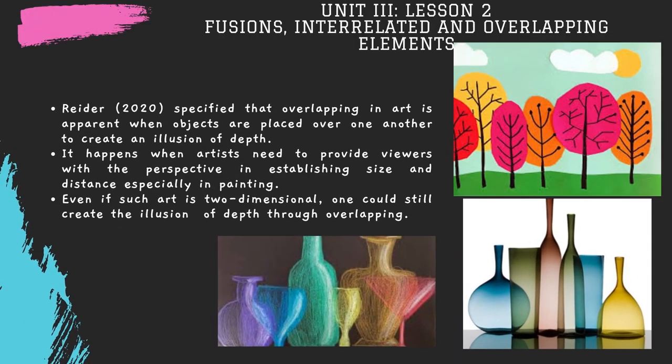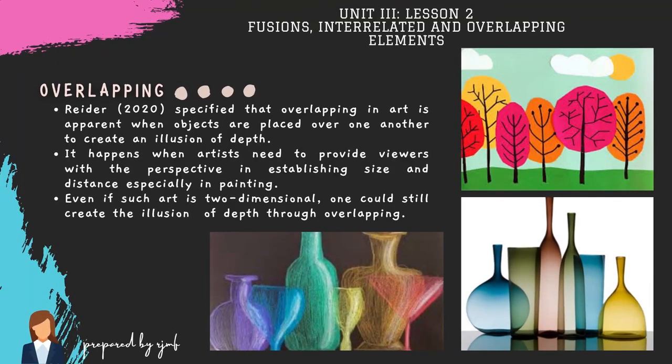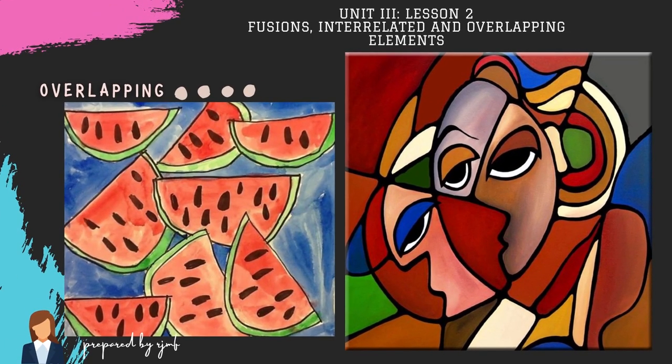Overlapping. Readers specified that overlapping in art is apparent when objects are placed over one another to create an illusion of depth. It happens when artists need to provide viewers with perspective in establishing size and distance, especially in painting. Even if such art is two-dimensional, one could still create the illusion of depth through overlapping. In fact, overlapping helps viewers to distinguish the closest and the farthest object from them. It also helps create the sense that there is an entire world inside the canvas that viewers could have a glimpse of. Further, it can be used to blur the lines of where one thing starts and another begins.